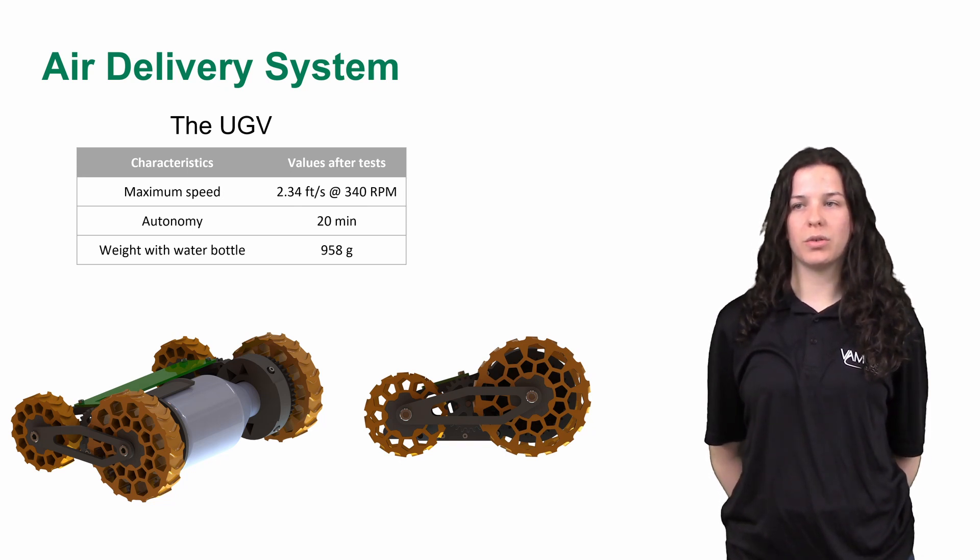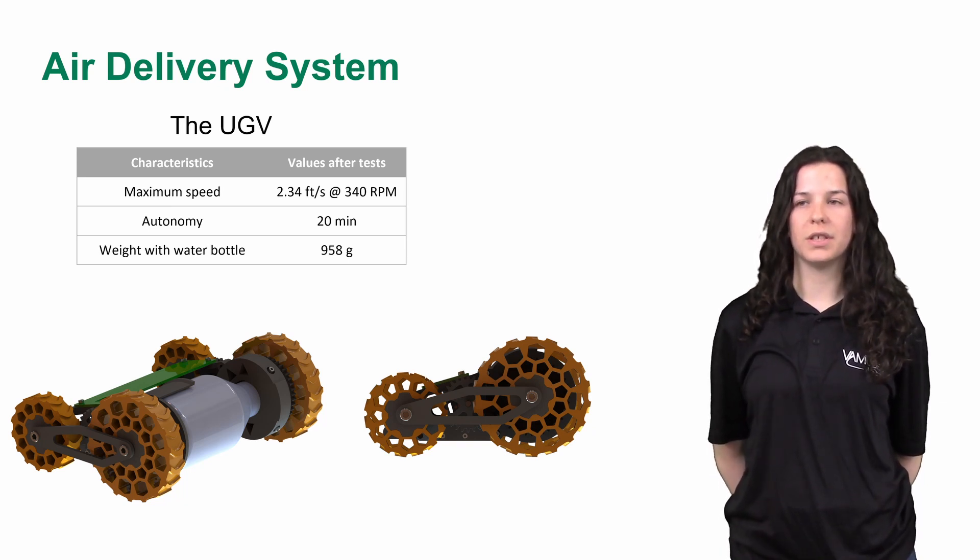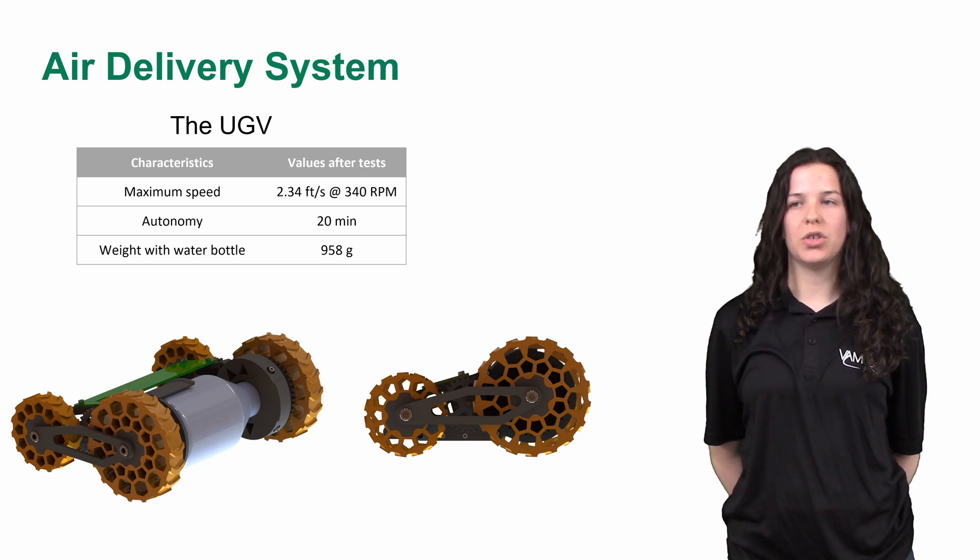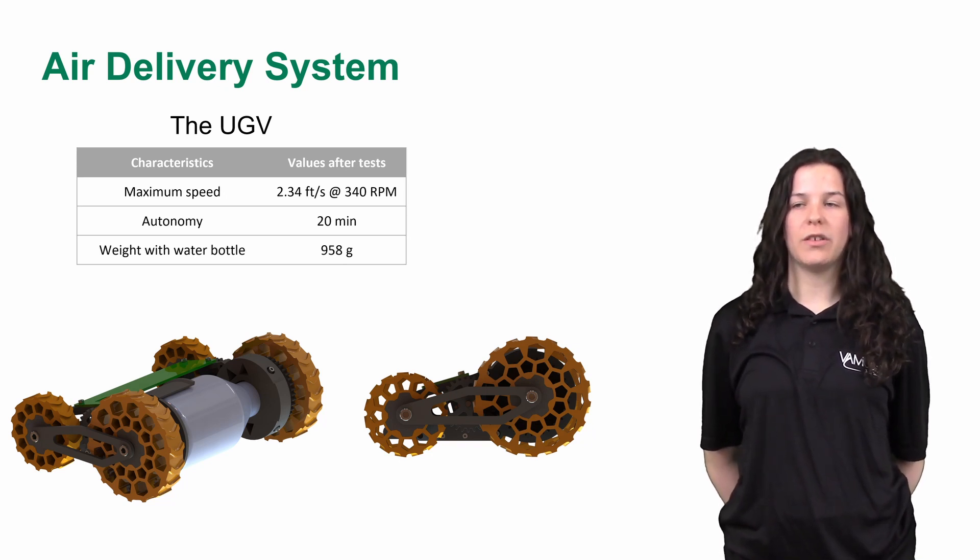The two-wheel drive was chosen to save on the numbers of motors to keep the weight as low as possible. The wheels were designed to be efficient on all kinds of surfaces. Two DC motors ensure the UGV motorization. They are capable of rotating at a speed of 90 RPM.